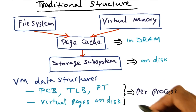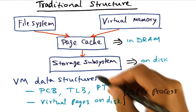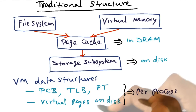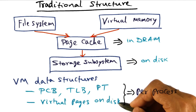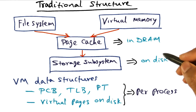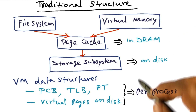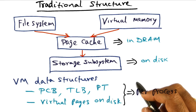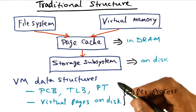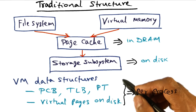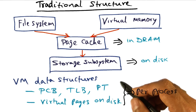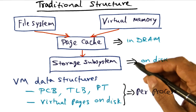All the virtual pages for that process are resident on the storage subsystems, so that if there is a page fault, the missing virtual page can be brought from the storage subsystem into the page cache for future access by the process. This is the traditional structure. What we want to do, for scalability, is to eliminate as much of the centralized data structures as possible. That's the key thing we're going to look at — how we can do that so that the operating system service will be scalable.